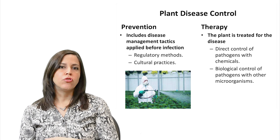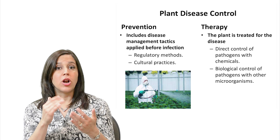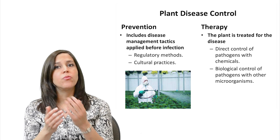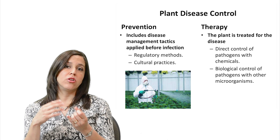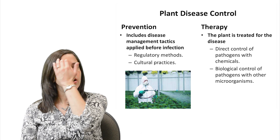For plant disease control, we can either try to prevent the disease from happening — using tactics applied before infection, including regulatory methods and cultural practices to avoid infection. But therapy is also important, where the plant is treated for the disease once it's present. Options include direct control of pathogens with chemicals, biochemical approaches, and biological control of pathogens with other microorganisms.